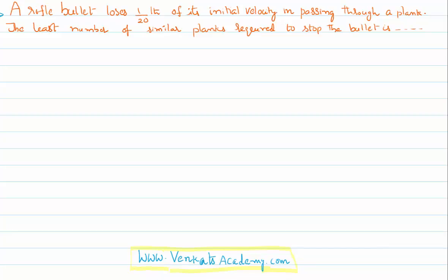Hello everyone, welcome to this video lesson. In this lesson we are going to solve a problem based on one-dimensional motion. Let me first describe what is given in the problem. It is given that there is a bullet; it loses 1/20th of its velocity, or initial velocity, in passing through a plank.